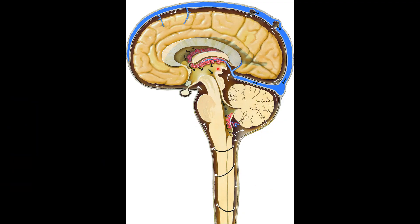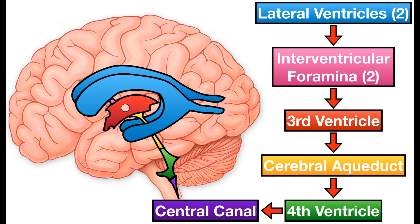CSF flows from the choroid plexus to the lateral ventricles, then to the third ventricle through the foramen of Monroe, then to the fourth ventricle through the aqueduct of Silvius, then via the foramen of Lushka laterally and the foramen of Magendie posteriorly into the central canal, bathing the entire brain and passing through the spinal cord. A separate class on CSF circulation will cover this in detail.